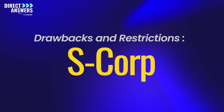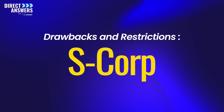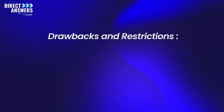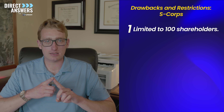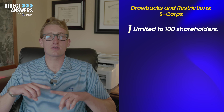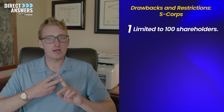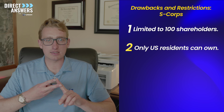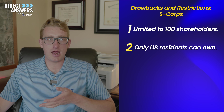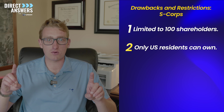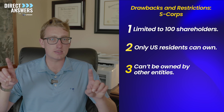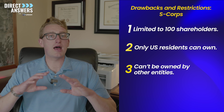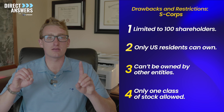However, if your business is taxed as an S-Corp, there are some drawbacks and restrictions. Number one, you can't have more than 100 shareholders. Number two, any shareholder must be a U.S. resident — unlike C-Corps, where an owner can be a foreign national. Number three, S-Corps can't be owned by other entities. And lastly, there's only one class of stock allowed if your business is taxed as an S-Corp.